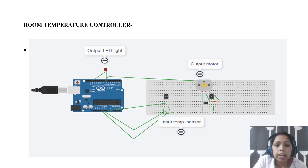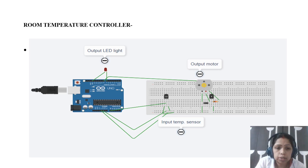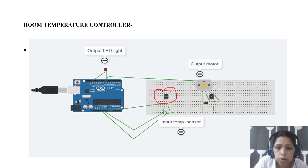Here you can see this is the TinkerCad diagram I have shown. The Arduino has the output LED light, the input temperature sensor, and the output motor. I will explain this in the circuit diagram.